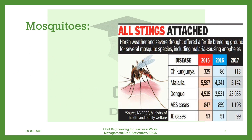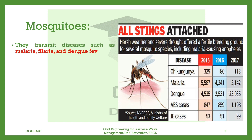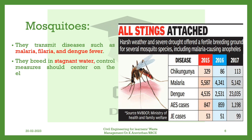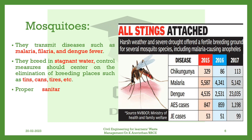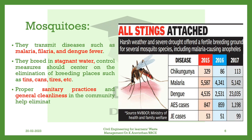Mosquitoes. They transmit diseases such as malaria, filaria, and dengue fever. They breed in stagnant water. Control measures should center on the elimination of breeding places such as tins, cans, tires, etc. Proper sanitary practices and general cleanliness in the community help eliminate mosquito problems.